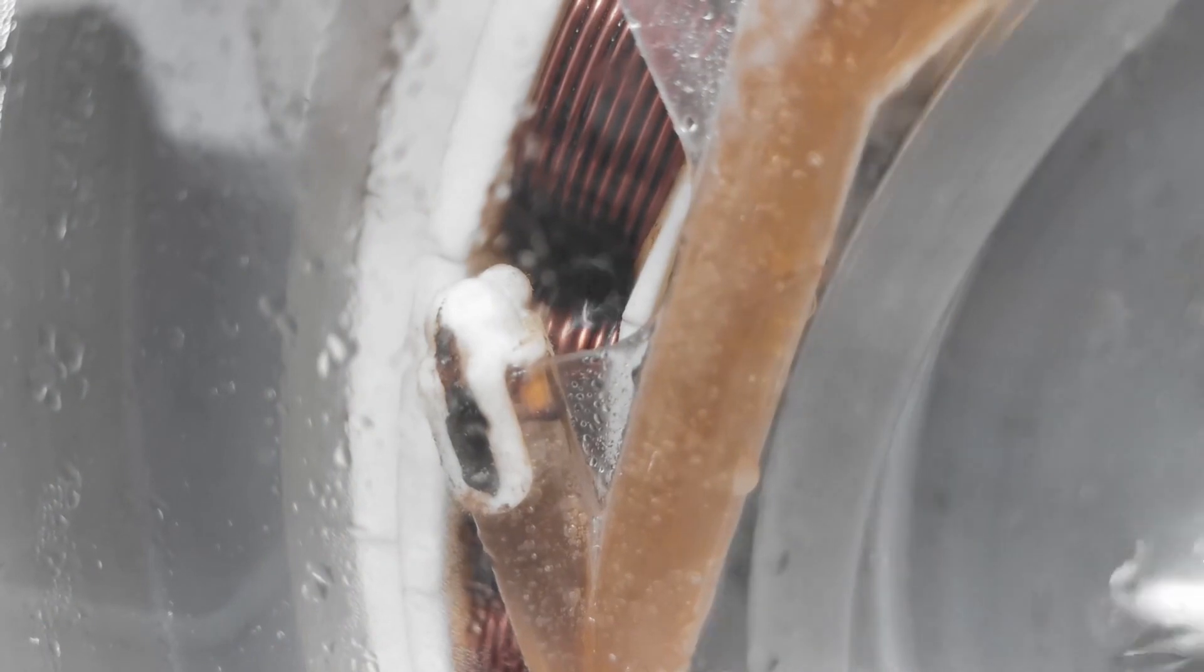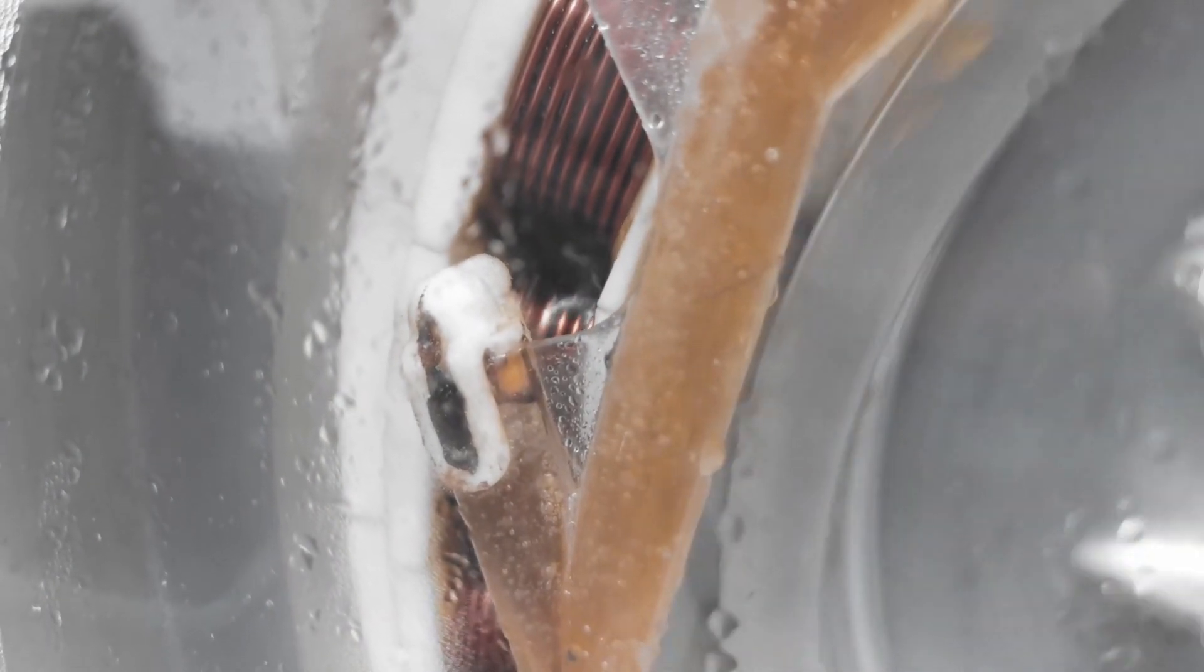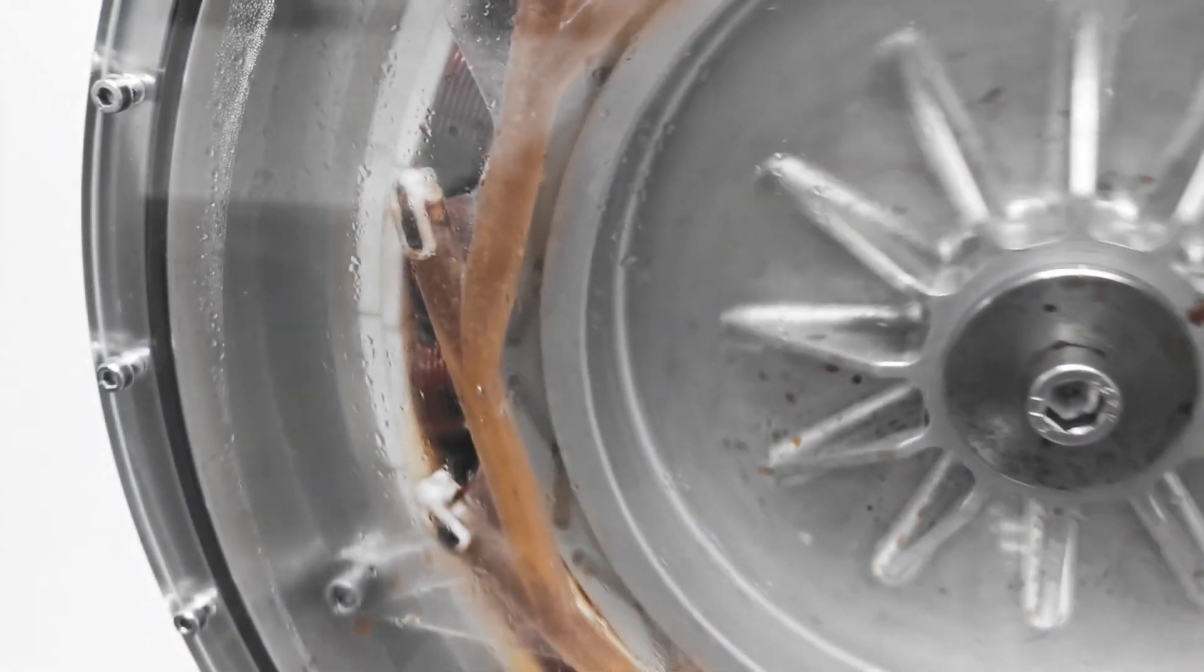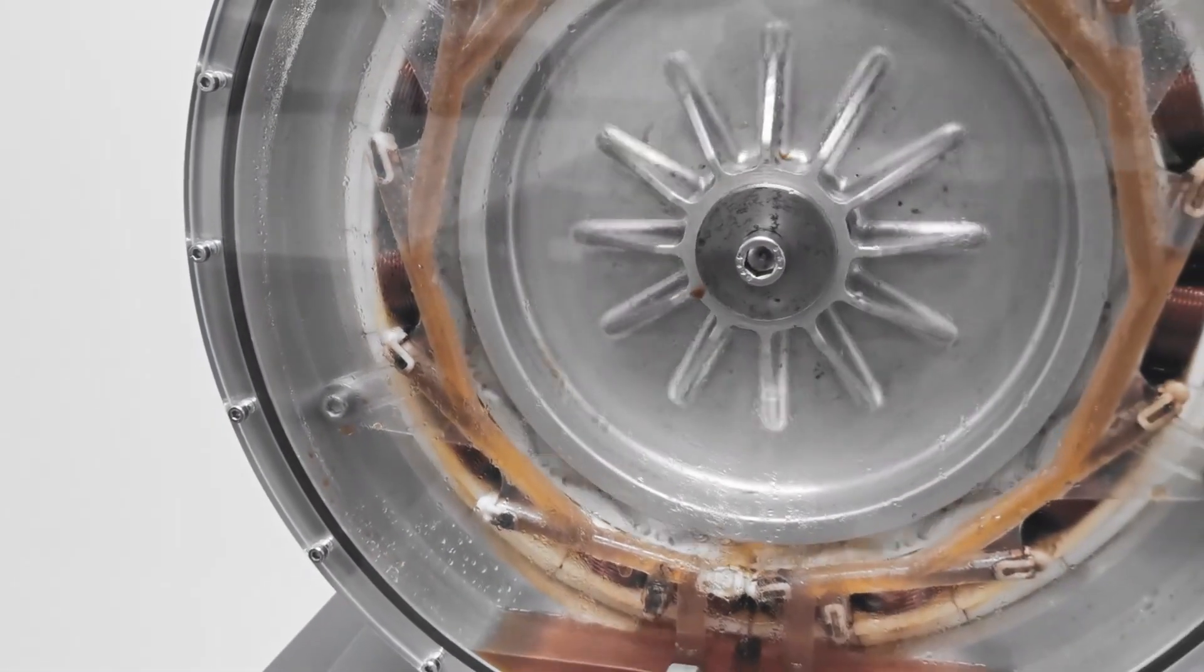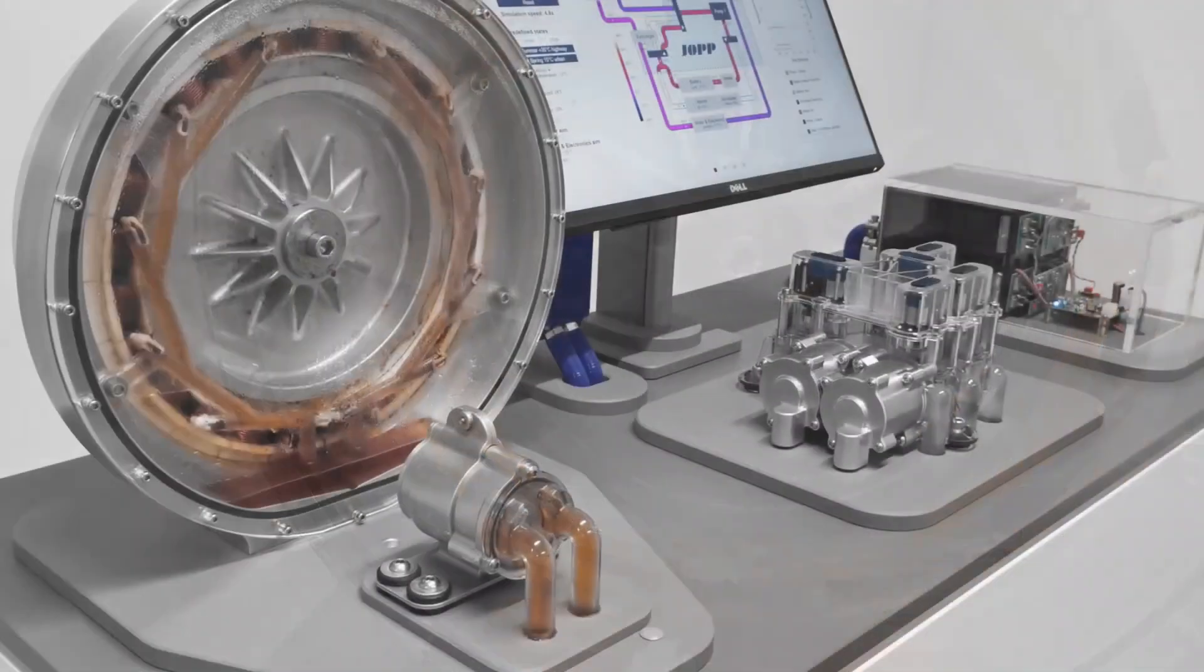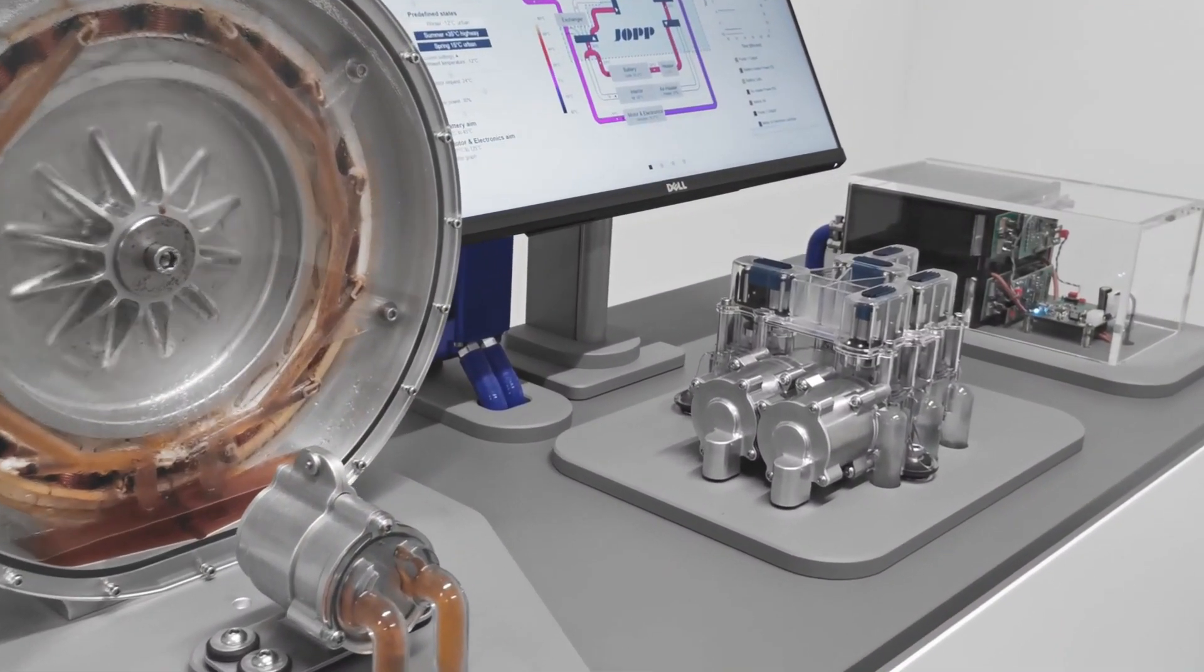Compared to a conventional liquid cooling jacket around the motor stator shell, with JOPP's solution, the thermal resistance from the cooling medium to the copper windings is reduced by 80%, offering considerable efficiency advantages.